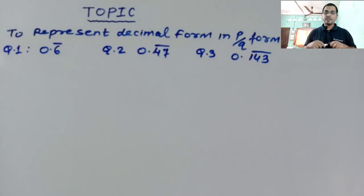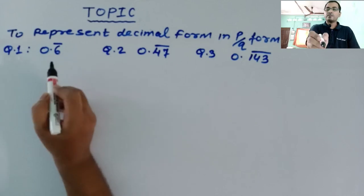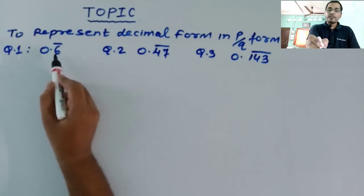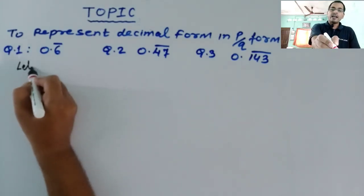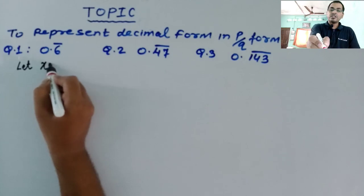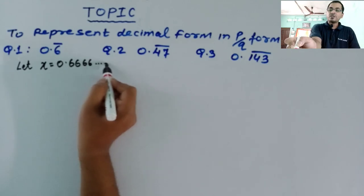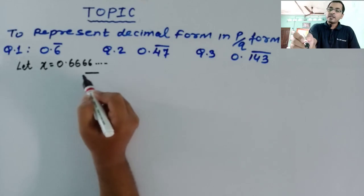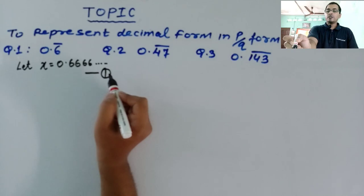In the very first question, you can see that we have 0.6 bar, which means 6 is occurring again and again up to infinite points. First of all, let x is equal to 0.66666 and so on, because this is a non-terminating recurring decimal expansion. Consider this as equation 1.